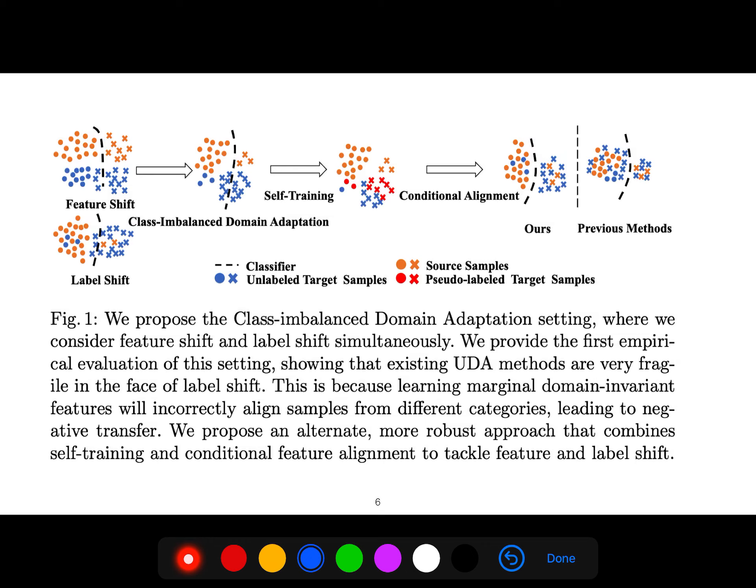We provide the first empirical evaluation of this setting showing that existing unsupervised domain adaptation methods are very fragile in the face of label shift. This is because learning marginal domain adaptation features will incorrectly align samples from different categories, leading to negative transfer.